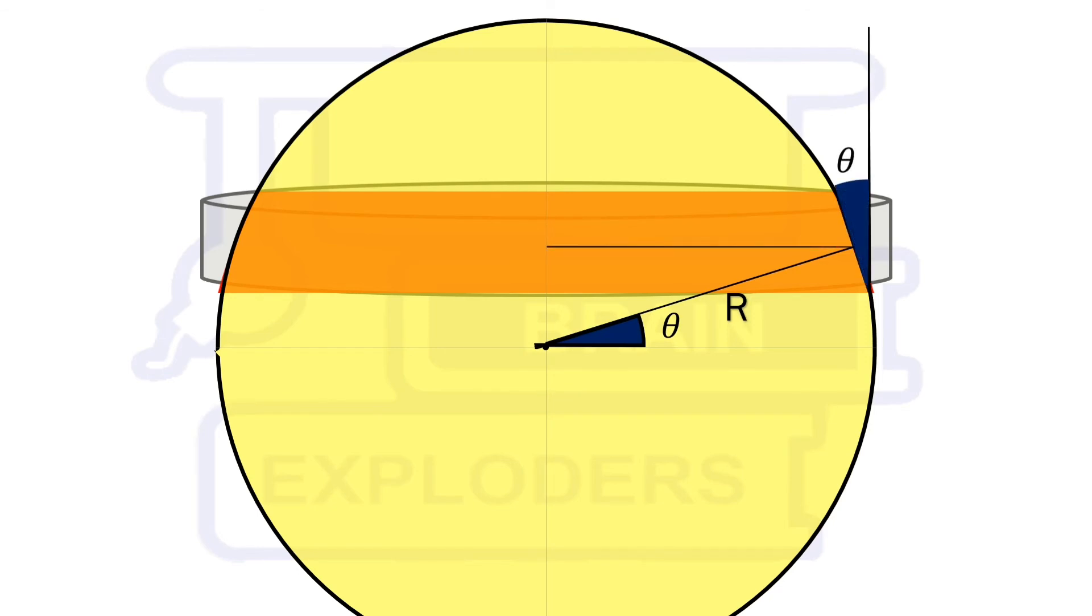Suppose these blue angles shown on the screen are theta and length of the arc is l. This arc is almost a straight line because it is very small. Accordingly, radius of the section of the sphere is r cos theta and height of cylinder is l cos theta.